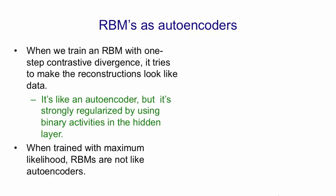If we train restricted Boltzmann machines with maximum likelihood, they're not at all like autoencoders. One way to see that is if you had a pixel that was pure noise, an autoencoder would try to reconstruct whatever noise value it had. A restricted Boltzmann machine trained with maximum likelihood would completely ignore that pixel and model it just using the bias for that input.